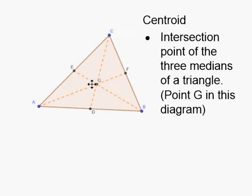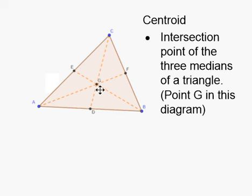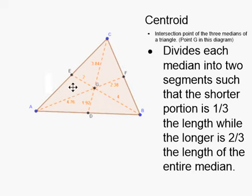That point has a special name and some special properties. The point where the three medians of a triangle meet is called the centroid of the triangle. The centroid is the intersection point of the three medians — that's point G on this diagram. One of its properties has to do with how that point divides the three medians.